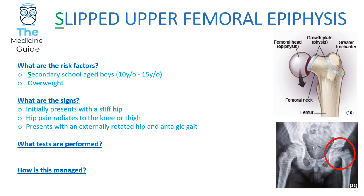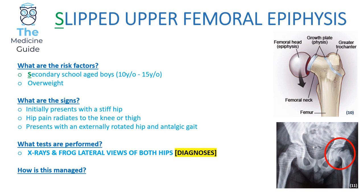Slipped upper femoral epiphysis is quite dangerous. Looking at the top right-hand picture, the femoral head — the epiphysis — has almost slipped off and fragmented from the growth plate, the physis. In terms of tests, we need to do an X-ray and a frog lateral view of both hips, which is diagnostic. Be really aware of this, as you could have a question asking which test diagnoses slipped upper femoral epiphysis — automatically go to X-rays and frog lateral views.